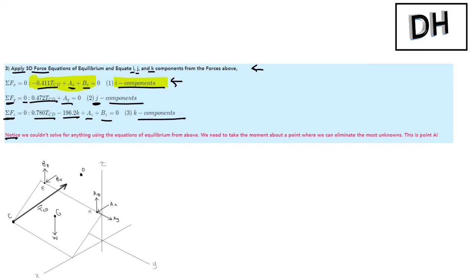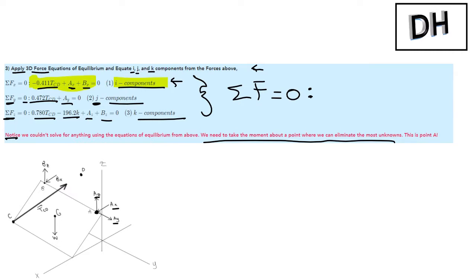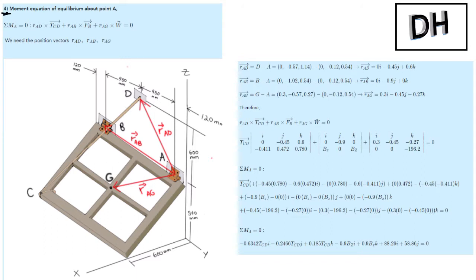Notice we couldn't solve for anything using just the force equations of equilibrium. So now we have to proceed by taking the moment about a point to eliminate the most unknowns. In this case, we take the moment about point A, which eliminates Ax, Ay, and Az. The moment about A is R cross F. I chose position vectors RAD times the tension, RAB times the reaction force at B, and RAG times the weight. These position vectors are found from the figure: RCD = D minus A, RAB = B minus A, RAG = G minus A. Do your coordinates and find your position vectors.